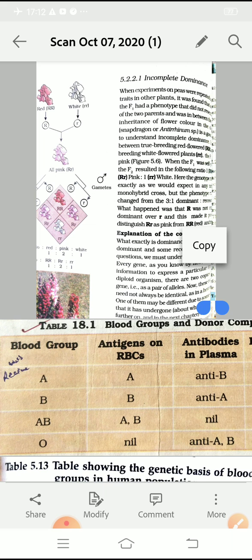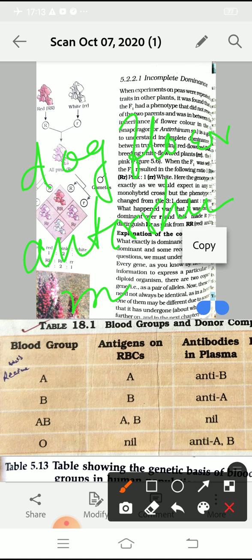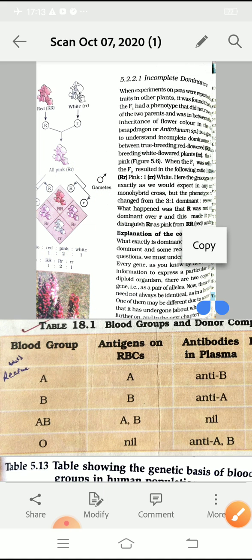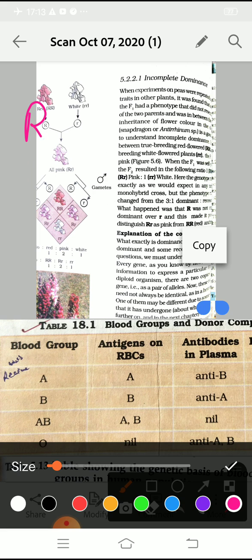A very important example is the dog flower, also known as Antirrhinum majus — this is the common name and botanical name respectively, and it is also given in your books. With the help of this example, I am going to explain incomplete dominance. Two kinds of flowers are there: we take the red flower, written as capital R capital R, and the white flower, written as small r small r — not W W.